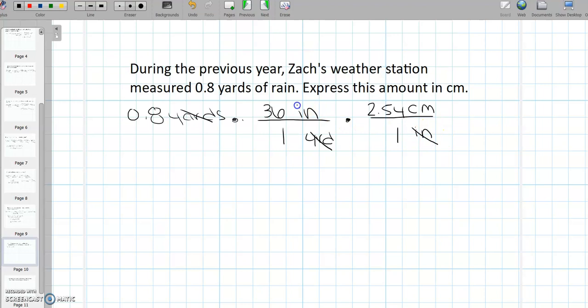So to do so, we need to cancel out these inches. So we need something over inches. Preferably, this should be centimeters. And I saw in our conversion chart that there is 2.54 centimeters in 1 inch. So we can cancel out these inches, and now we are left with 0.8 times 36 times 2.54. And all of our units canceled except for these centimeters, which is great. So all we need to do is the math. So 0.8 times 36 times 2.54, and that gives us 73.152 centimeters.